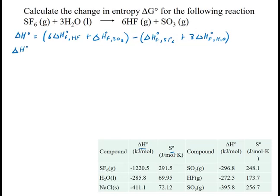Now I'm just going to plug in my numbers. I have six times HF - the first column is delta H, so it's -272.5 plus the SO3, which is -395.8, minus the SF6 which is -1220.5 plus three times the water as a liquid, which is -285.6.